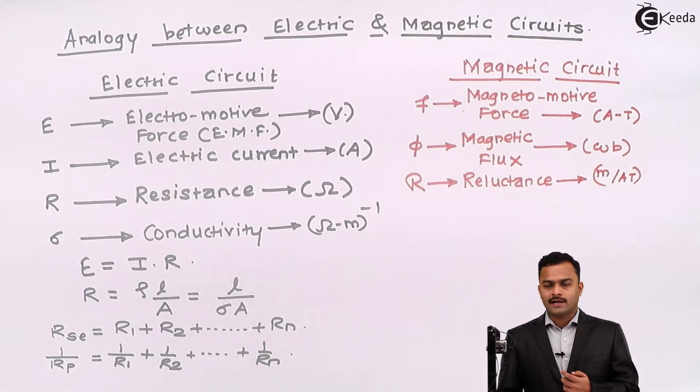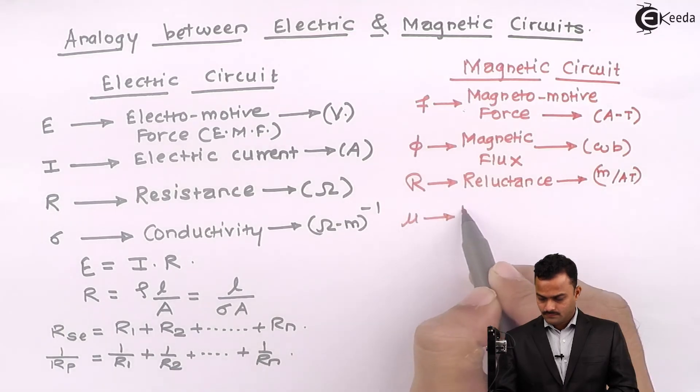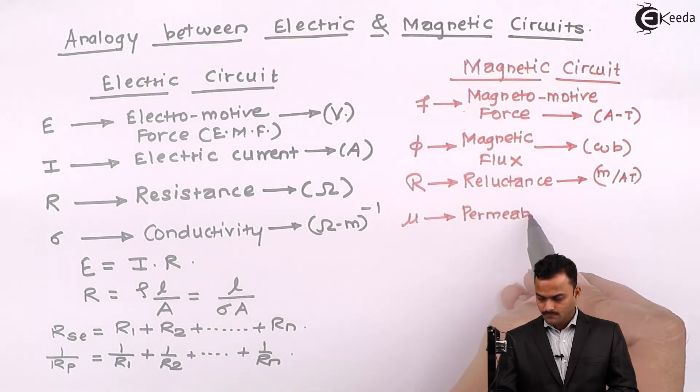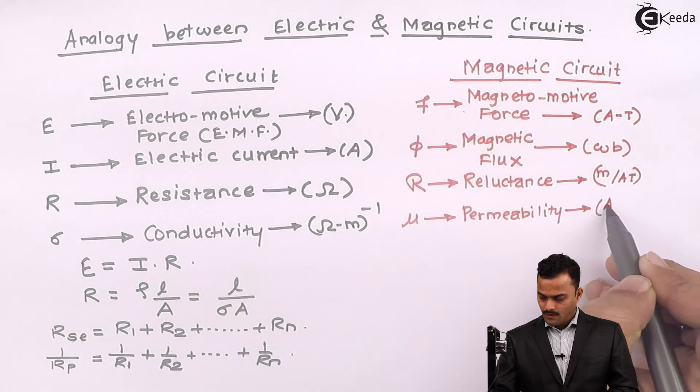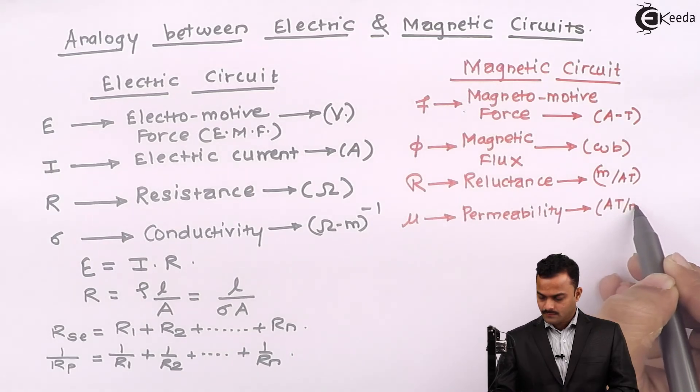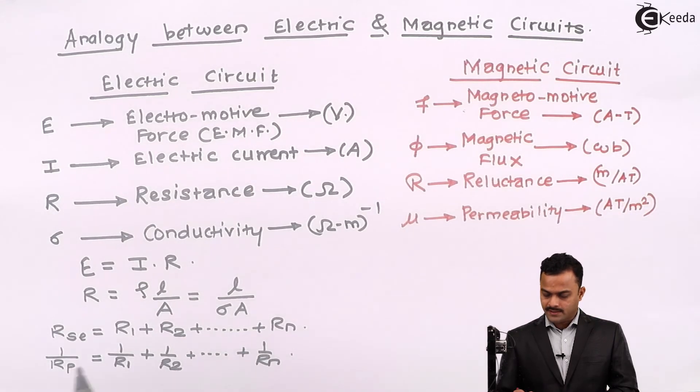Analogous to conductivity, we have permeability. And the unit of permeability is ampere turn upon meter square.